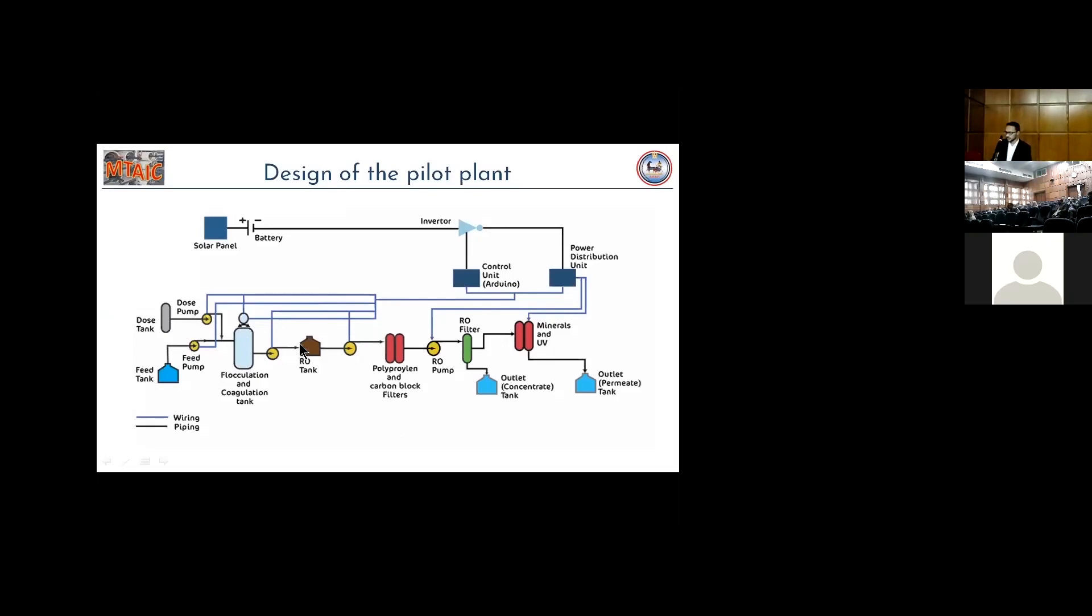After that, the RO tank will be partially loaded with water. And then the water passes through the multimedia filter of polypropylene and carbon block. Polypropylene to make sure that there is no suspended solid in the water, and carbon block to remove the chlorine that may harm the RO membrane if existing. Then the RO separates the feed water to the concentrate, and the low TDS water to permeate that is used in the irrigation.